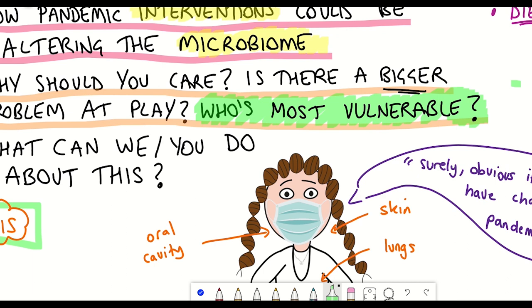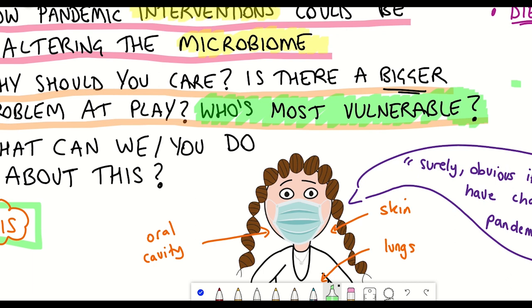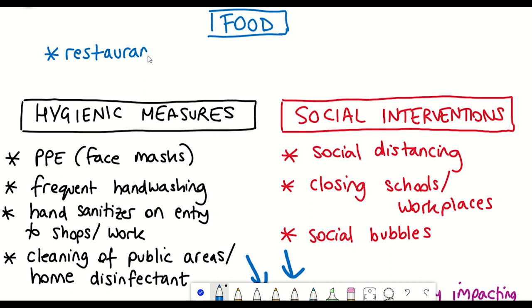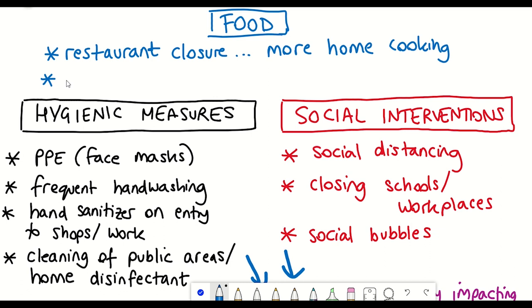And so I've mentioned a number of possible problems that could be resulting from these pandemic interventions. But is it all bad news? Well, some evidence seems to be suggesting that some of the interventions may be beneficial to improving our microbiome diversity.